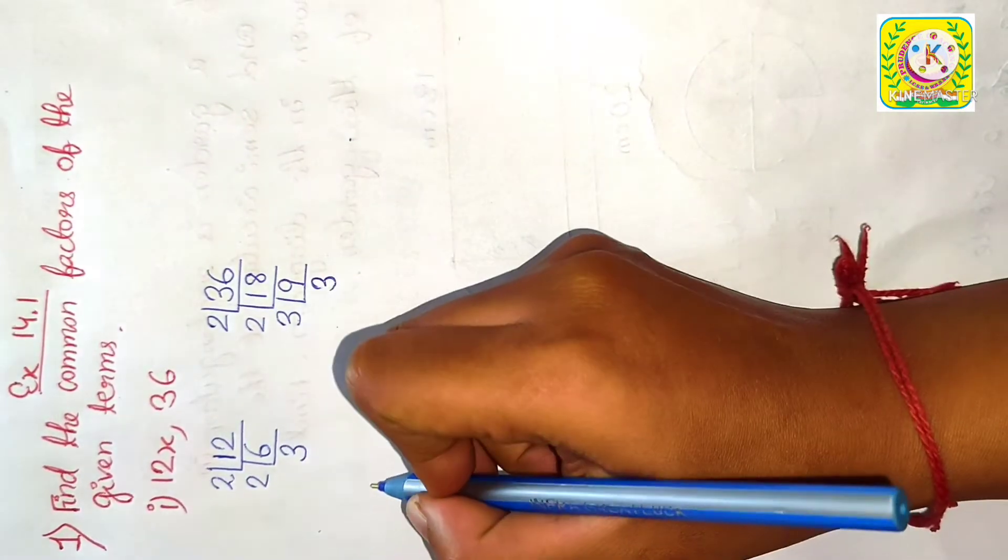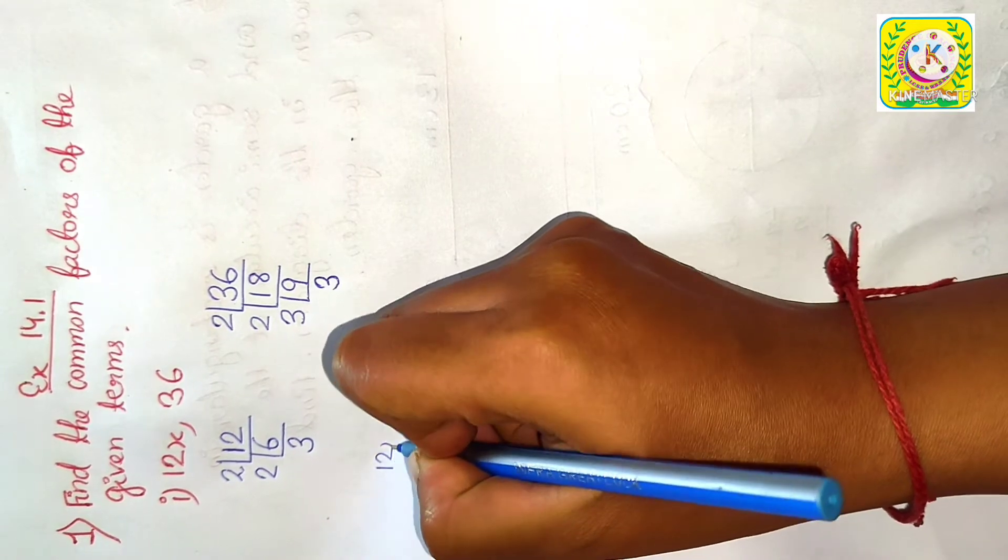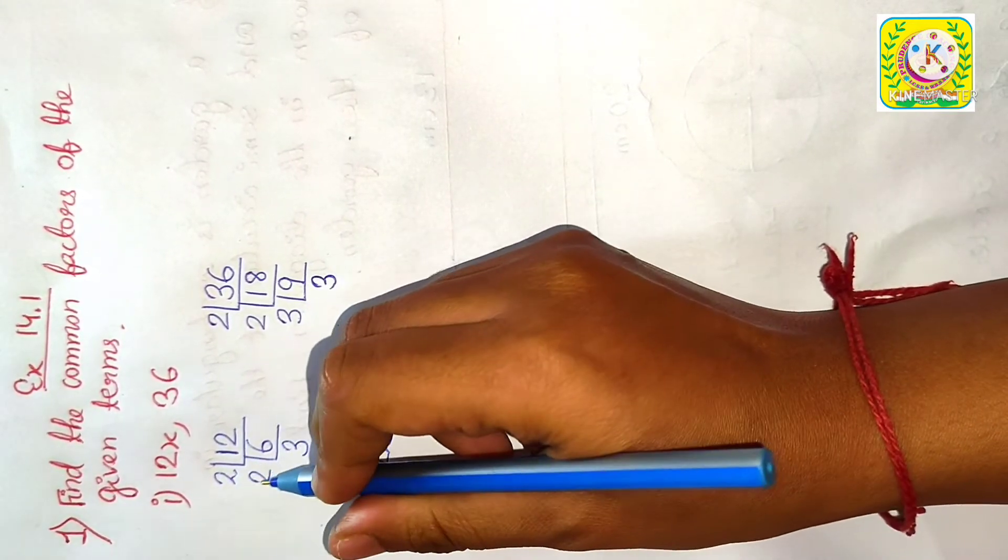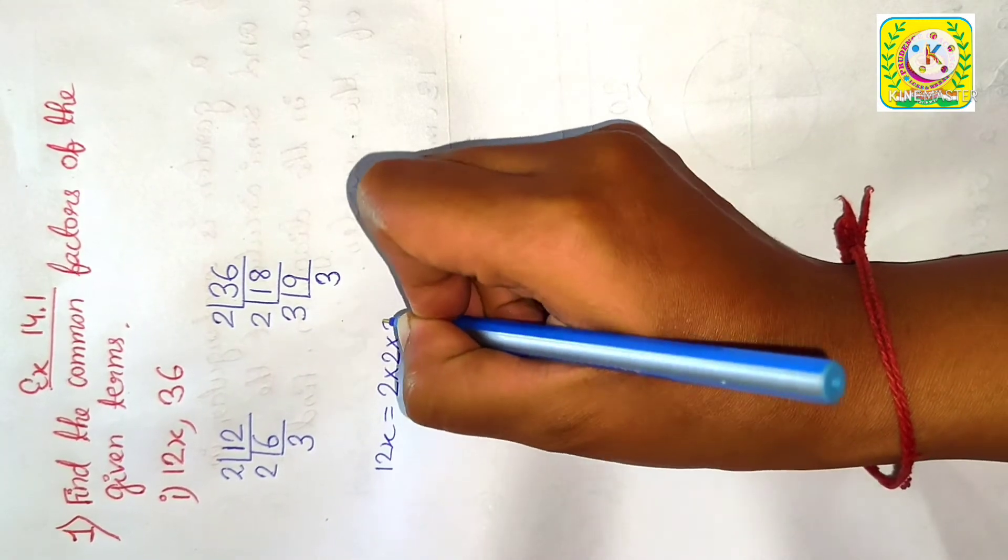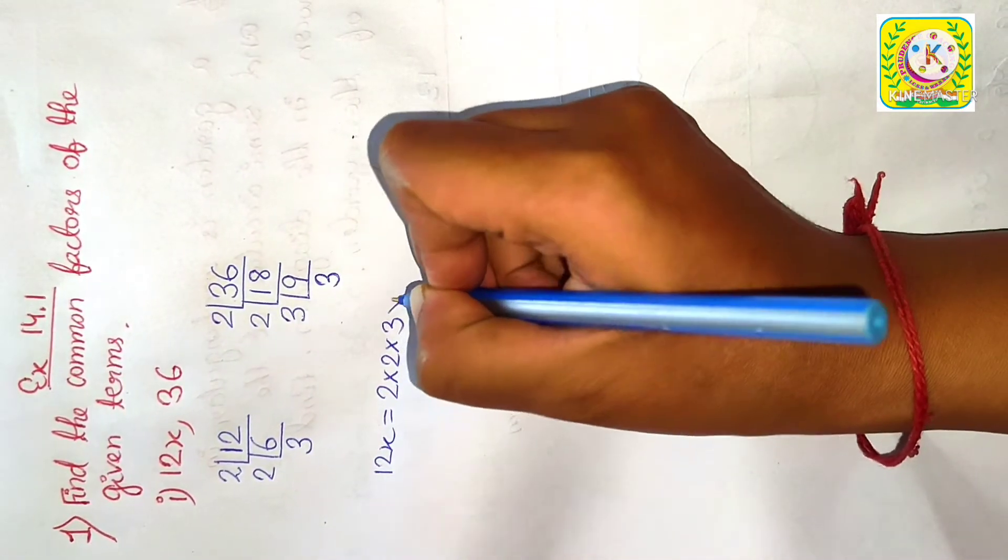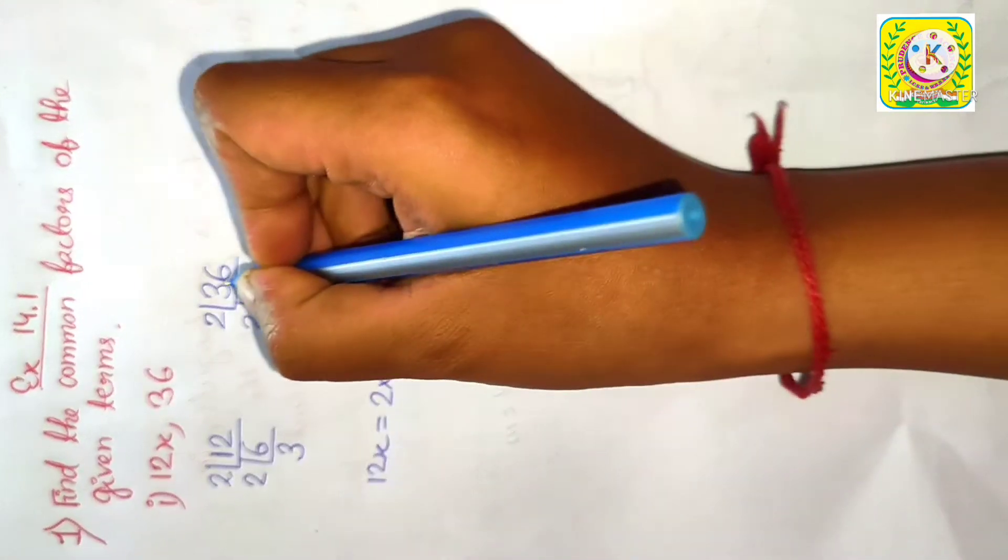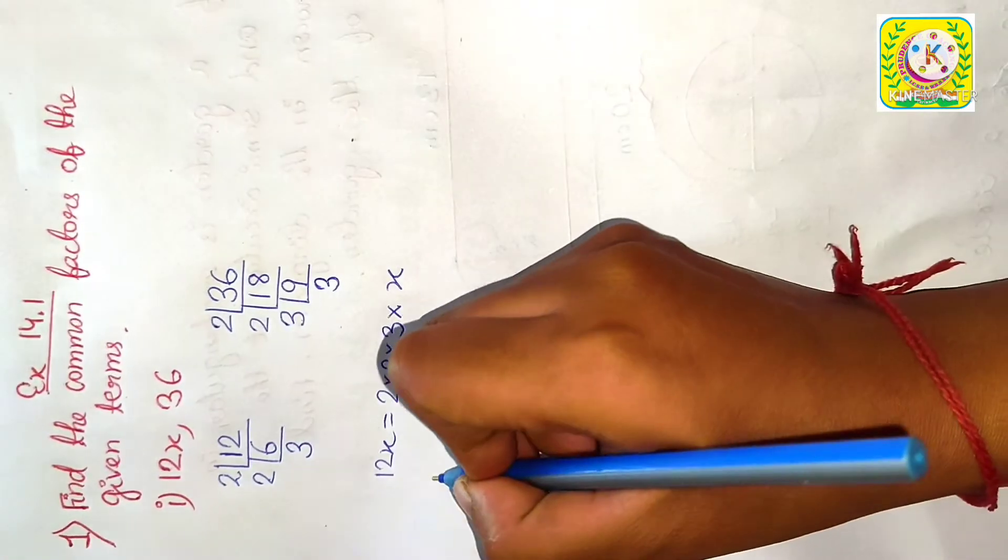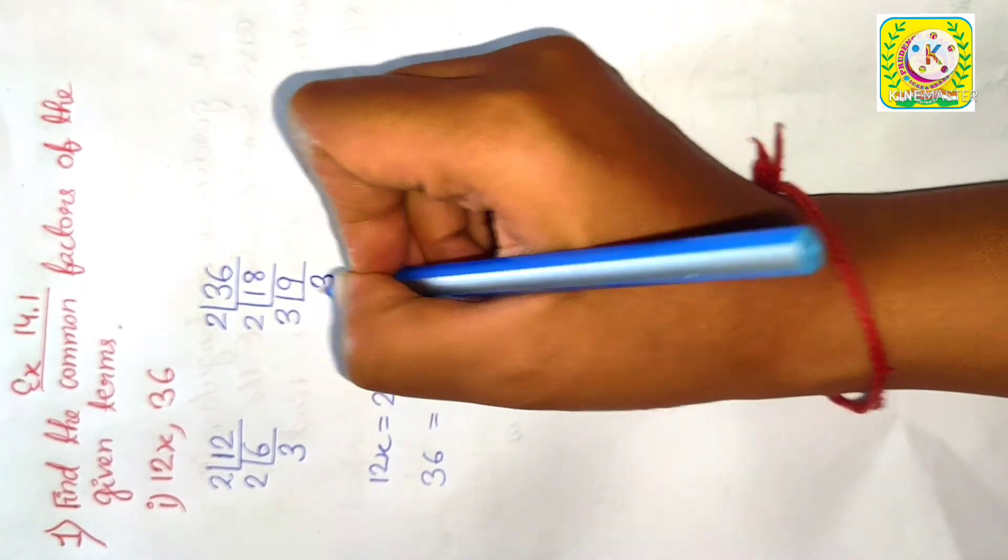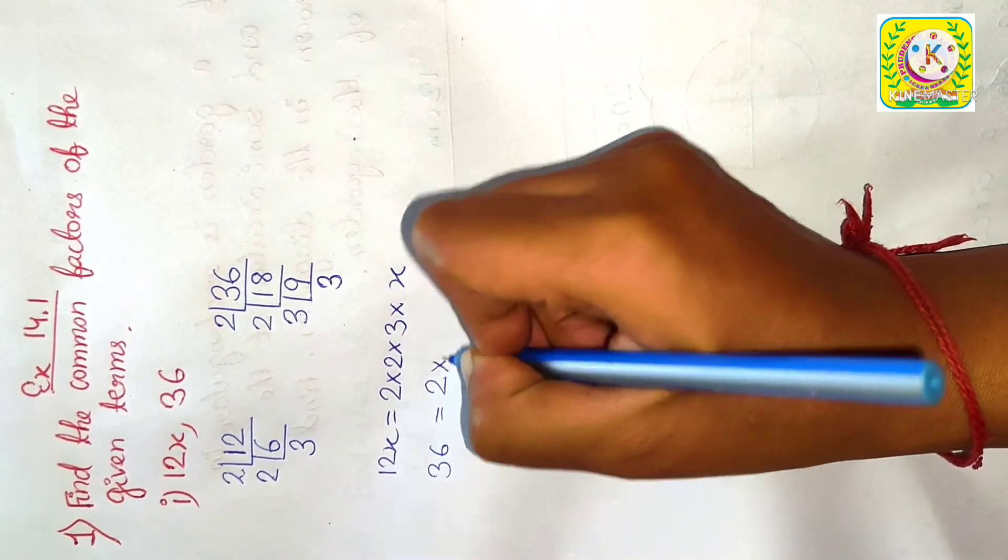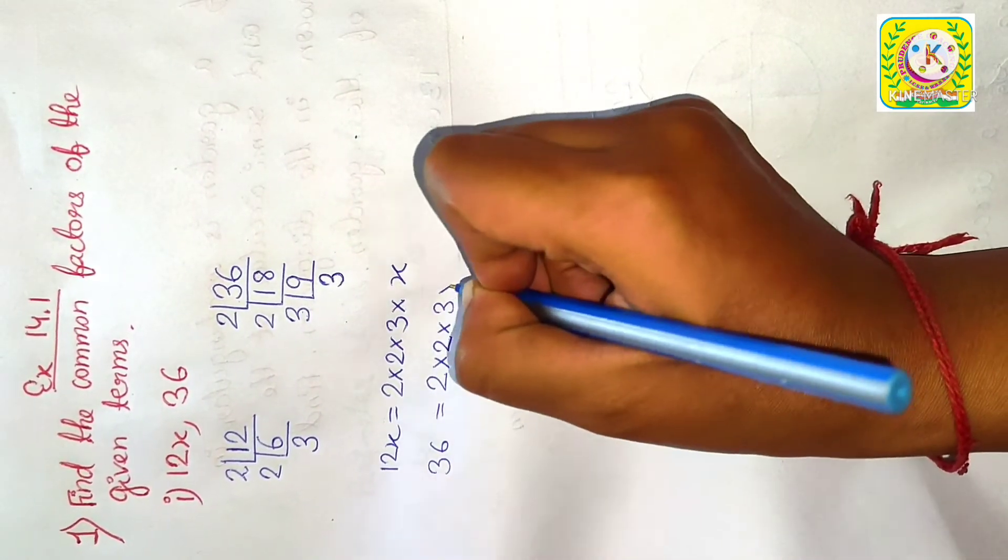We have 12x here, so we will write 12x equal to 2 into 2 into 3 in place of 12, and we have an x here, so into x. Now, we have 36 here, so we can write 36 as 2 into 2 into 3 into 3. Write it down: 2 into 2 into 3 into 3.